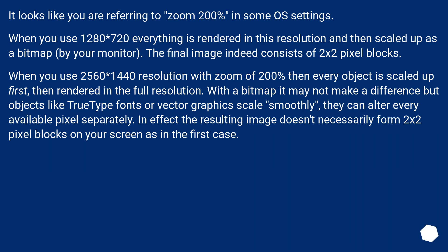It looks like you are referring to zoom 200% in some display settings. With a screen at 1280×720, everything is rendered in this resolution and then scaled up as a bitmap by your monitor. The final image indeed consists of 2×2 pixel blocks.